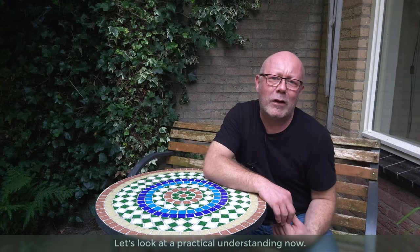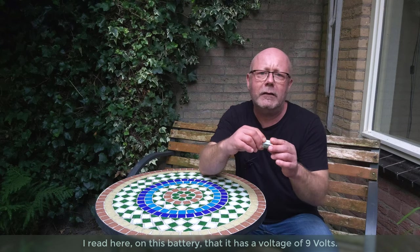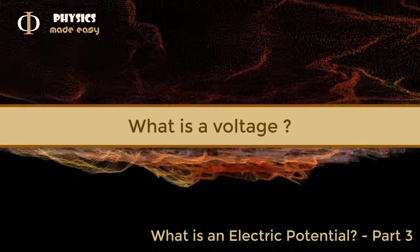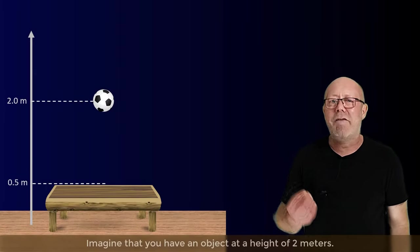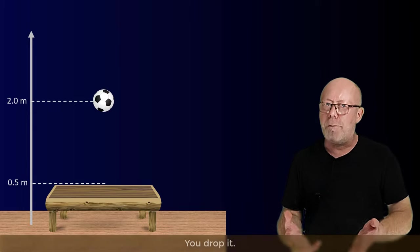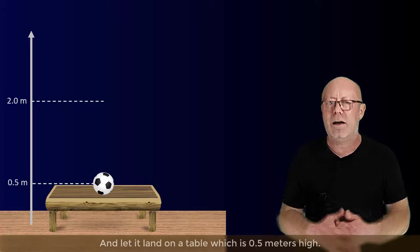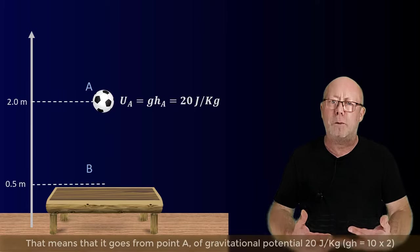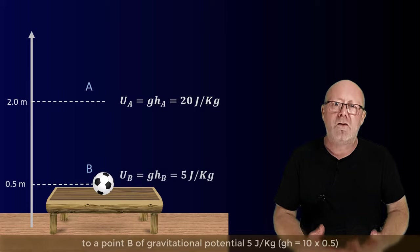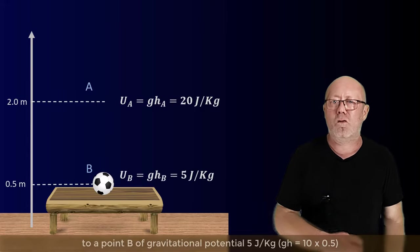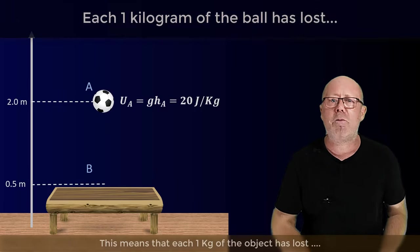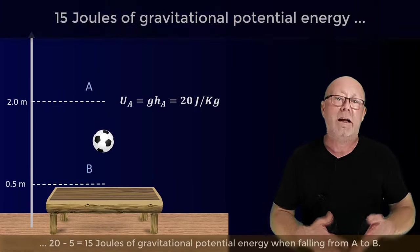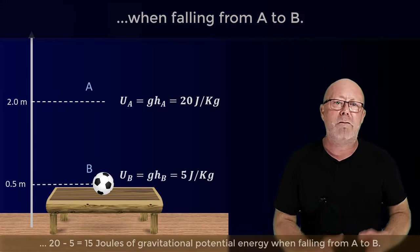Okay, let's look at a practical understanding now. I read here on this battery that it has a voltage of 9 volts. Let's see what this means. Again, we are going to use gravity to illustrate. Imagine that you have an object at a height of 2 meters; you drop it and let it land on a table which is 0.5 meters high. That means it goes from point A, which has a gravitational potential of 10×2 = 20 joules per kilogram, to a point B of gravitational potential of 10×0.5 = 5 joules per kilogram. This means that each 1 kilogram of the object has lost 20−5 = 15 joules of gravitational potential energy when falling from A to B.